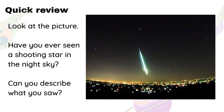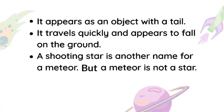Before moving on to our discussion, let's take a look at the picture. Have you ever seen a shooting star in the night sky? Can you describe what you saw? That's right! It appears as an object with a tail. It travels quickly and appears to fall on the ground.